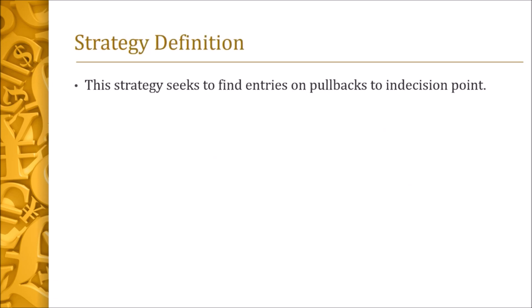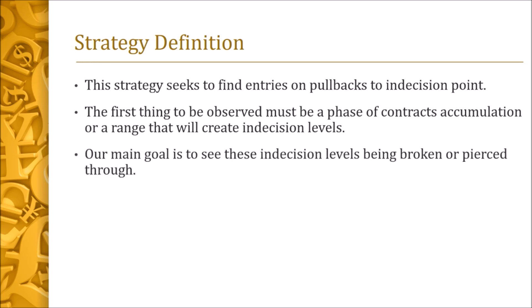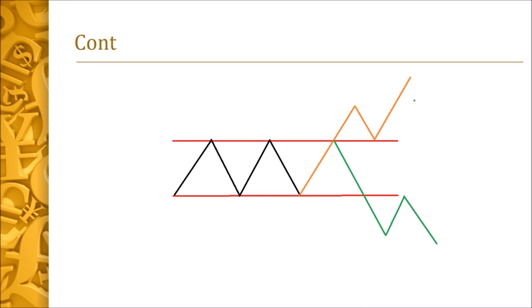Here is the strategy definition: this strategy seeks to find entries on pullbacks and indecision points. The first thing to observe must be a phase of contract accumulation or ranging of the market that creates indecision levels on the upside or downside. Our main goal is to see these indecision levels being broken or pierced through. Retest of the pierced indecision points will be our point of interest.